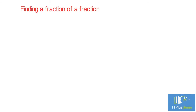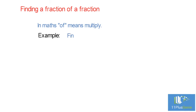When finding a fraction of a fraction, in maths 'of' means multiply. Example: find a half of a quarter. A half of a quarter is the same as a half times a quarter, which equals one-eighth.